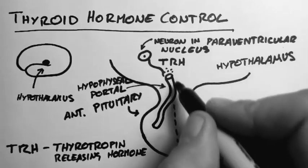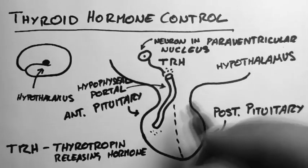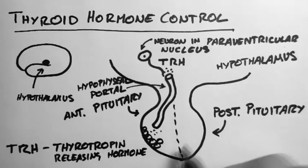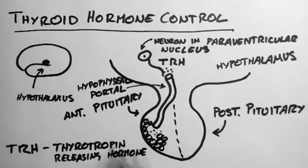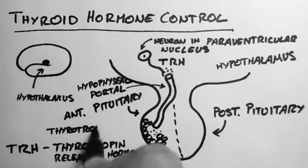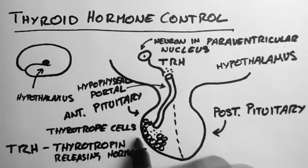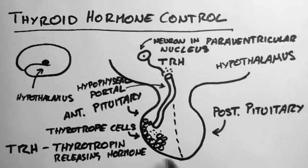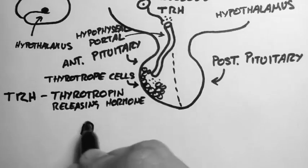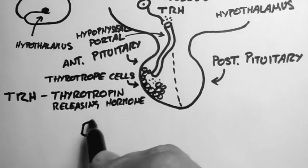Now the TRH travels down the portal vein and then diffuses into the anterior pituitary. And there's a bunch of endocrine cells down here known as thyrotrope cells. And in response to the TRH, they produce another hormone.